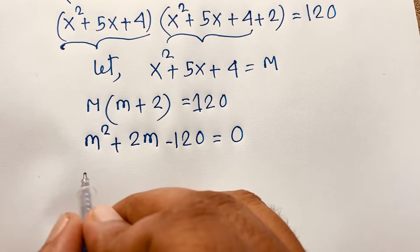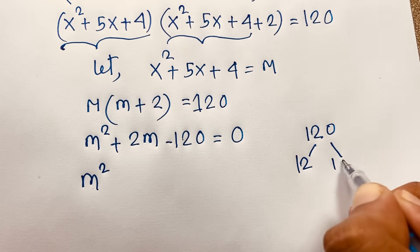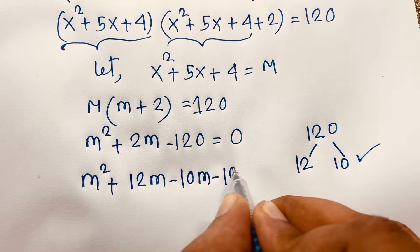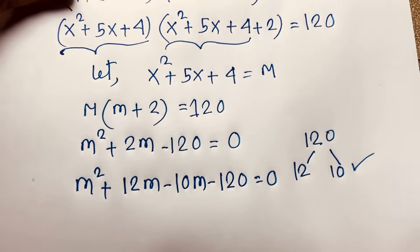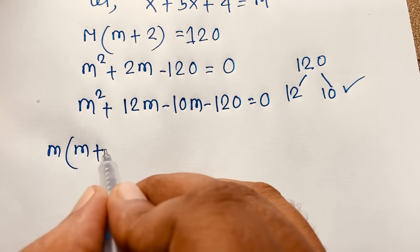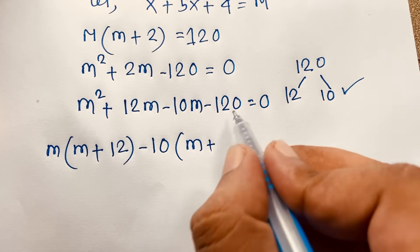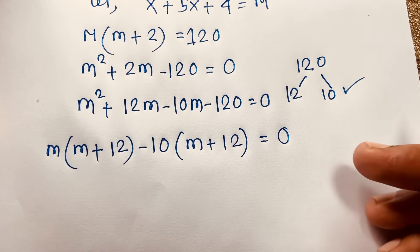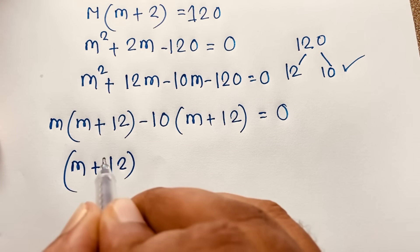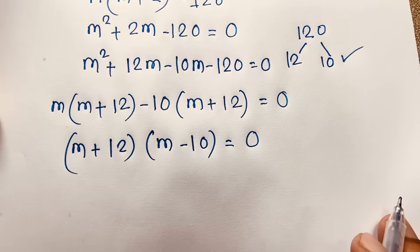This is a nice quadratic equation. I factor by splitting the middle term: 120 = 12×10, and 12−10 = 2. So m²+12m−10m−120 = 0. Factoring: m(m+12)−10(m+12) = 0, giving (m+12)(m−10) = 0. Therefore m = −12 or m = 10.